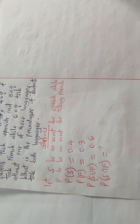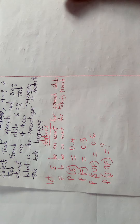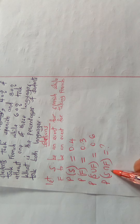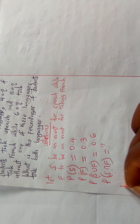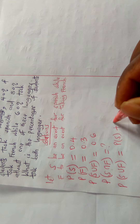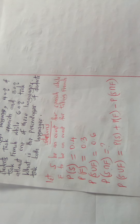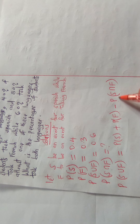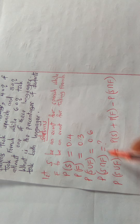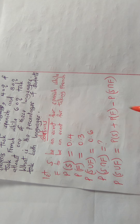To find P(S ∩ F), you must first know the general formula for P(S ∪ F). The formula states: P(S ∪ F) = P(S) + P(F) − P(S ∩ F). Since we've been asked to find P(S ∩ F), we already have the other values — the union is 0.6, P(S) is 0.4, and P(F) is 0.3 — so we just substitute.